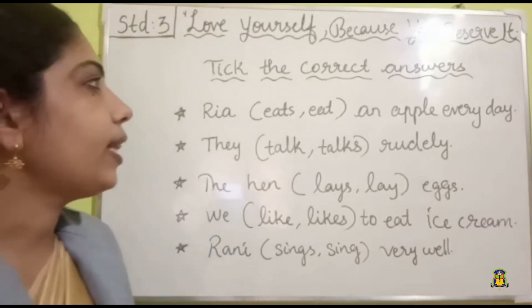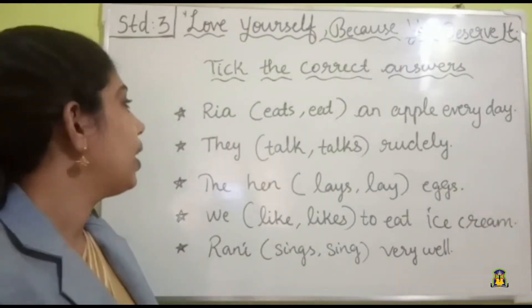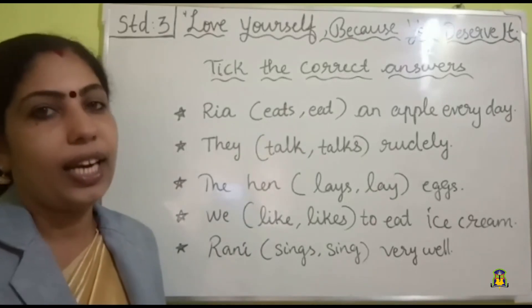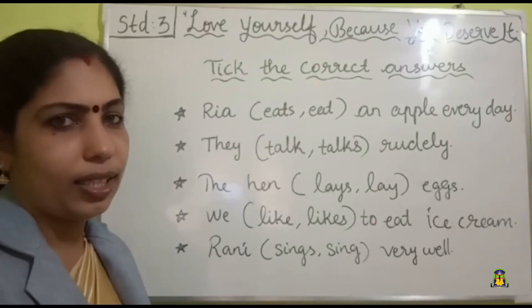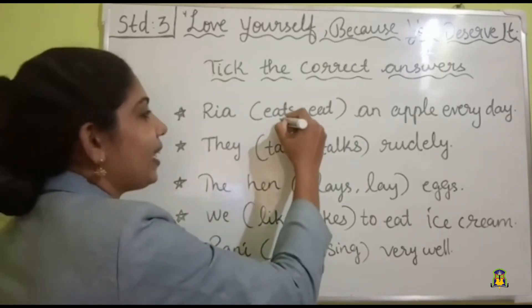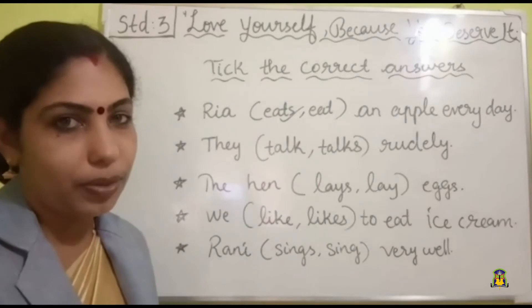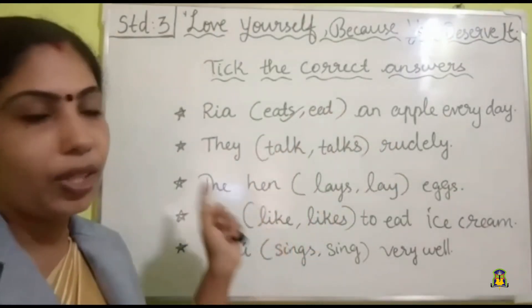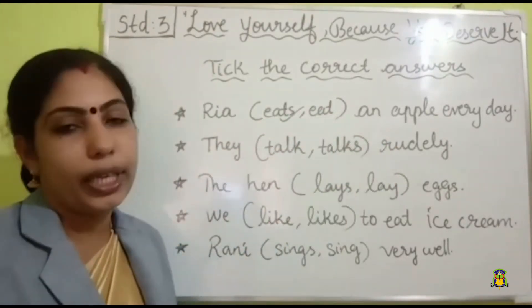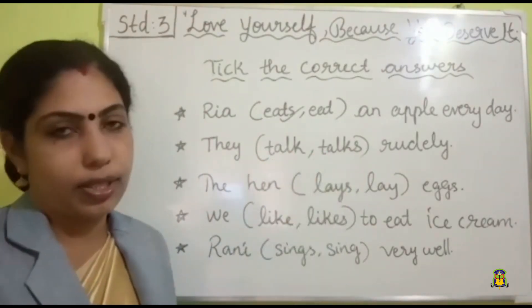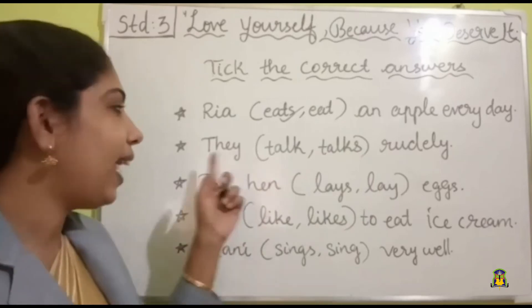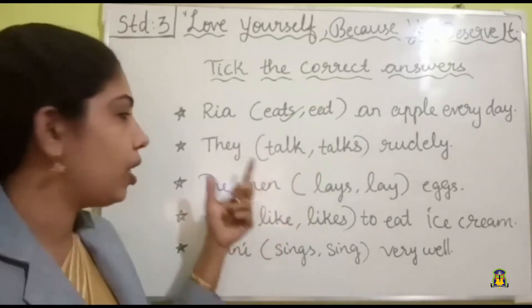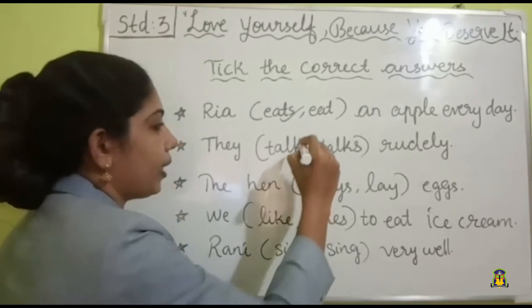Exercise B: Tick the correct answers. First question: 'Rhea ___ an apple every day.' Options: eats / eat. Rhea is a singular subject, so we add S to the verb. Correct answer: 'Rhea eats an apple every day.' Second question: 'They ___ rudely.' Options: talk / talks. 'They' is a plural pronoun, so we do not add S. Correct answer: 'They talk rudely.'